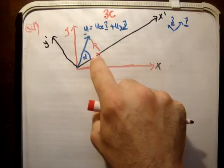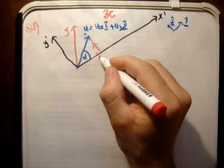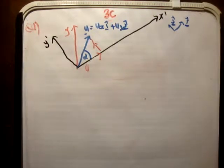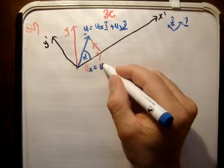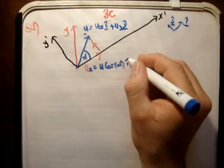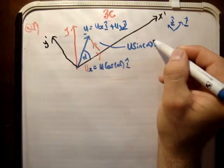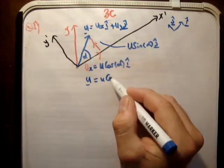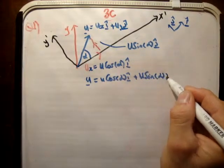I'm going to get rid of the angle beta for the moment because we don't really need it — it just clutters up the diagram. So u sub x is equal to u times the cosine of alpha, in the i-hat direction. And u sub y is going to be u times the sine of alpha in the j-hat direction. Therefore u equals u cosine alpha i-hat plus u sine alpha j-hat.